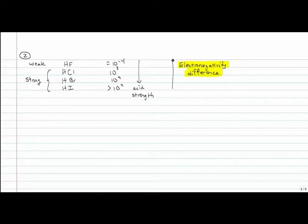However, it's the weakest of all these. So there must be something that's a more overriding factor when there are already large electronegativity differences or similar electronegativity differences. Because fluorine, chlorine, bromine, and iodine are all highly electronegative.